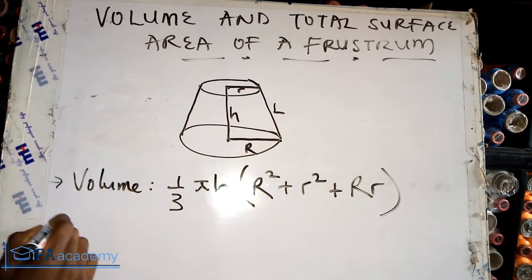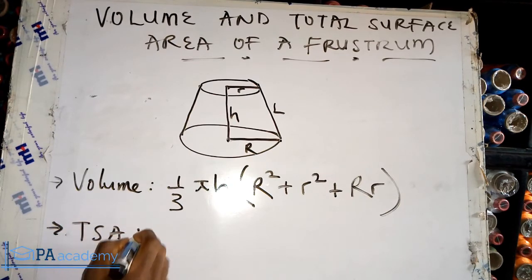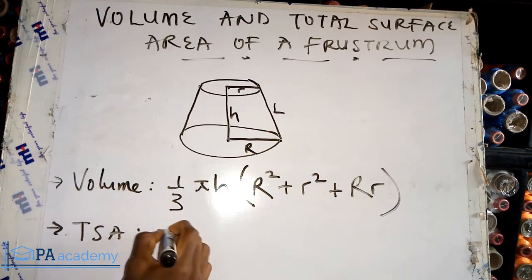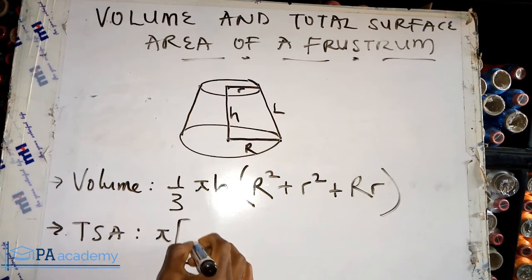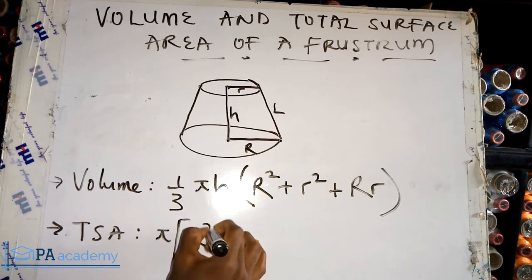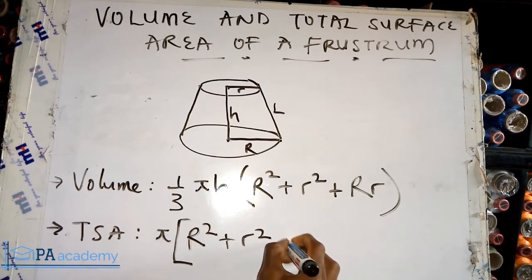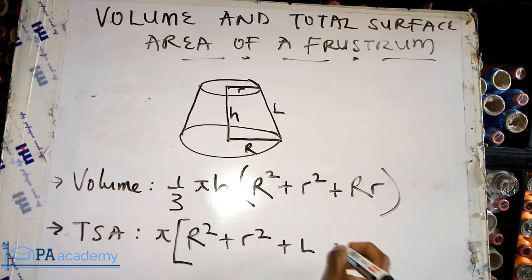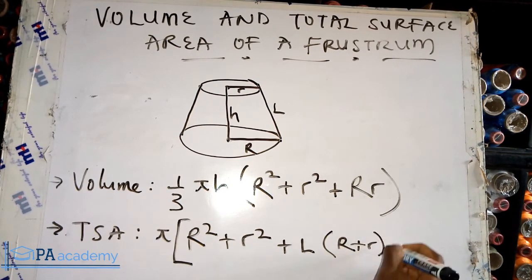The next formula we are going to look at is the total surface area — TSA. The formula for TSA is: pi, open brackets, capital R squared plus small r squared, plus l into brackets R plus r, close brackets.